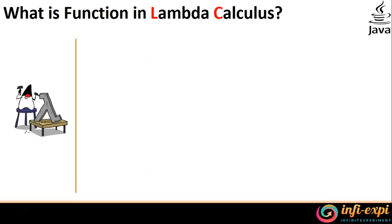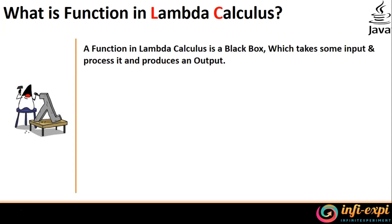If you look at the fundamental of Lambda Calculus, it has a function representation in it. We need to observe how Lambda Calculus functions internally. We need to consider Lambda Calculus as a black box. In that black box we are going to offer an input, the black box is going to process the given input and produce an output. Internally, what happens inside that black box is not revealed — that's why it is called a black box. Lambda Calculus abstracts the functionality that happens inside the black box.